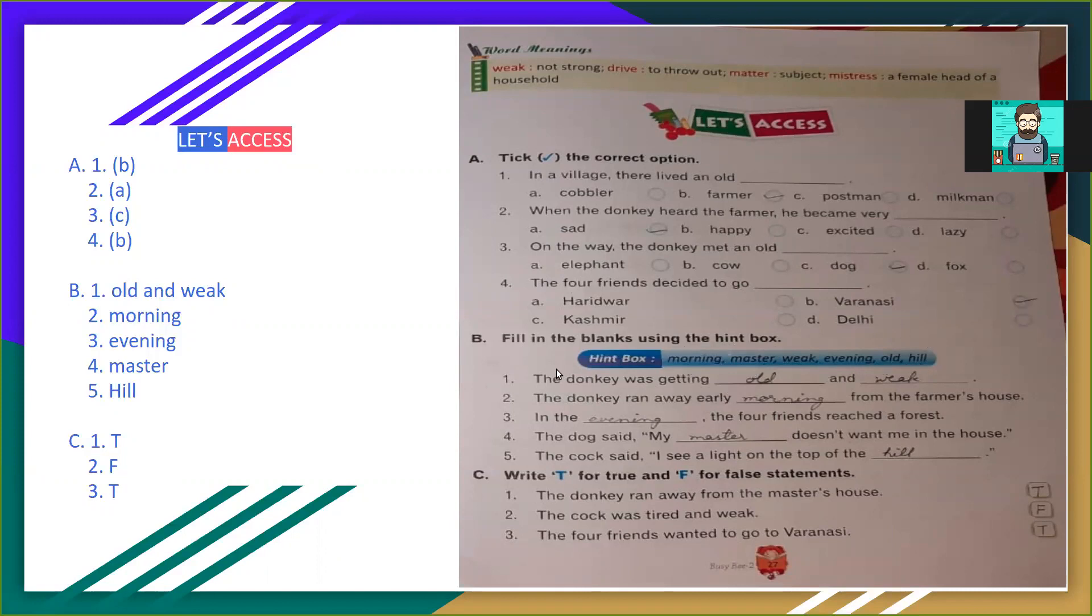First, the donkey was getting old and weak. Toh hum log likhenge hai old and weak. Second, the donkey ran away early morning from the farmer's house. Toh morning likhenge hai second mein. Donkey subah-subah apne farmer ke house se bhaag jata hai.